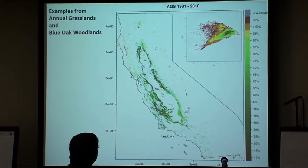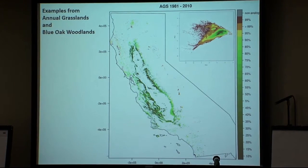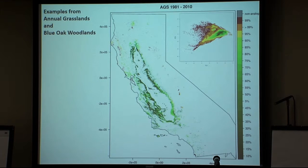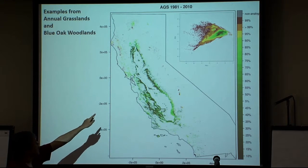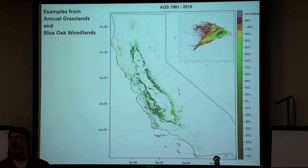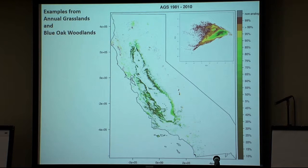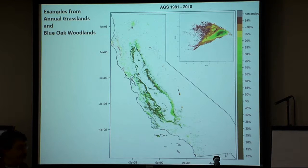In the report coming out from the state, we used macro group, but for this group we've rerun some analyses using the same FRAP map with WHR types. This is annual grasslands — almost exactly the same as the previous map. The greens are the places where that climate is the most common — what grasslands experience most frequently. The red ones around the edges are in places that are the least common climate conditions for grasslands in California at this time.